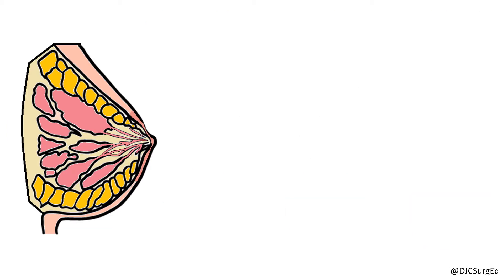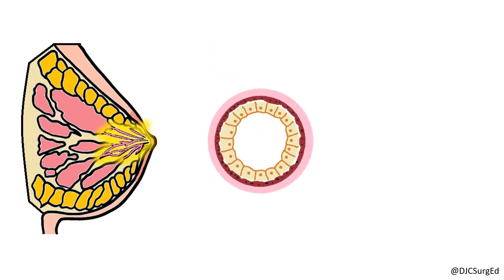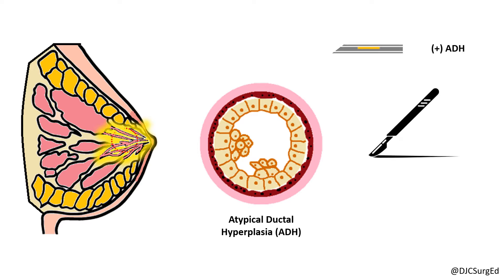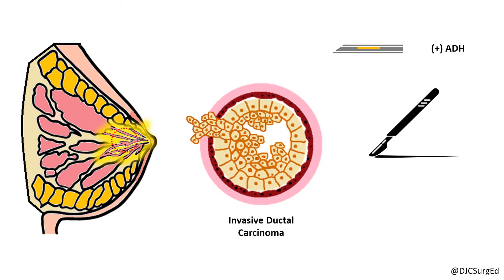Atypical ductal hyperplasia (ADH) is characterized by the proliferation of dysplastic, uniform epithelial cells with monomorphic round nuclei filling part but not all of an involved duct. ADH can present as suspicious microcalcifications on mammography. ADH requires surgical excision when found incidentally on core biopsy, as up to 20% of specimens are upgraded to DCIS or invasive ductal carcinoma.